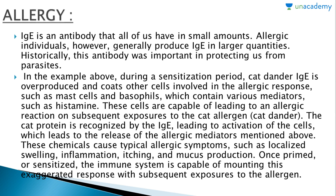IgE is an antibody that all of us have in small amounts; allergic individuals, however, generally produce IgE in larger quantities. Historically, this antibody was important in protecting us from parasites. During a sensitization period, cat dander IgE is overproduced and coats other cells involved in the allergic response, such as mast cells and basophils, which contain various mediators such as histamine.